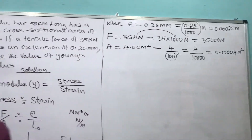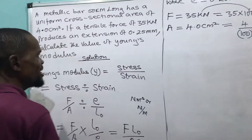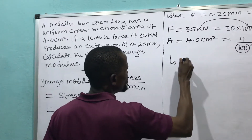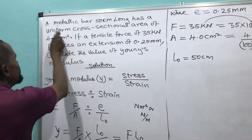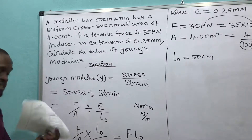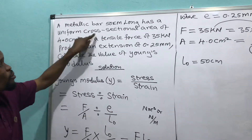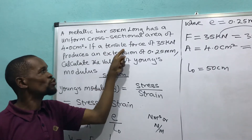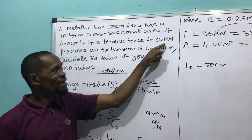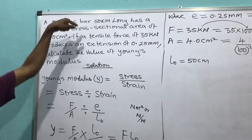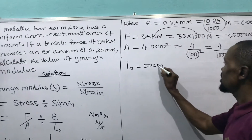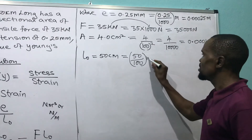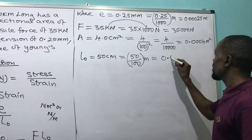Now I need the original length. The question says a metallic bar 50 cm long — so L₀ is 50 cm. I cannot leave it in centimeters. I divide 50 by 100, which gives me 0.5 meters. That is my original length converted to meters.